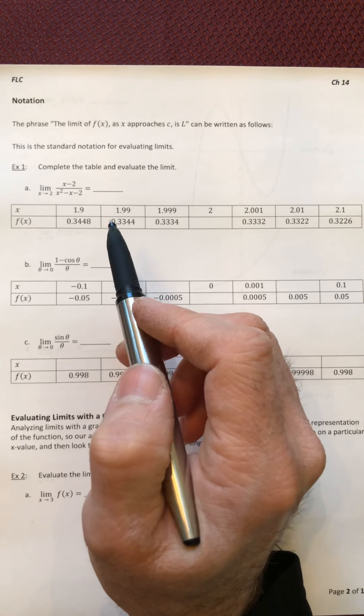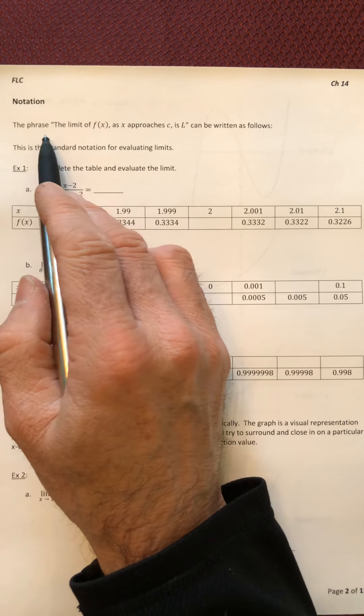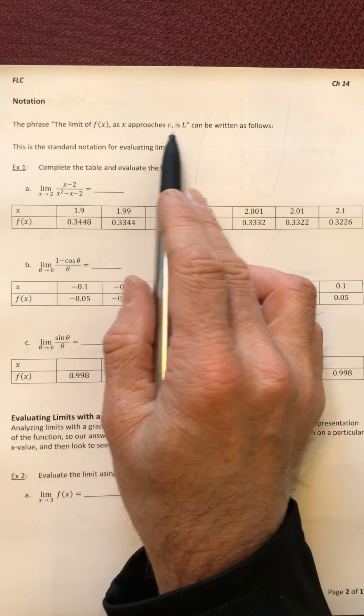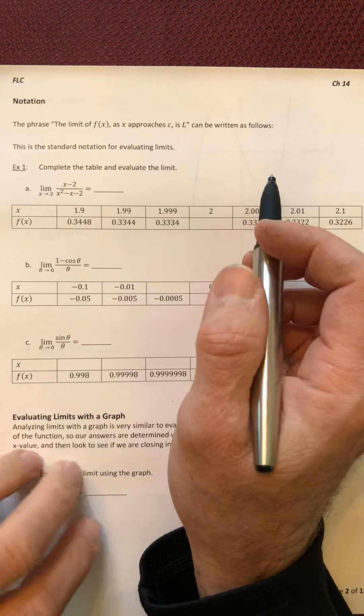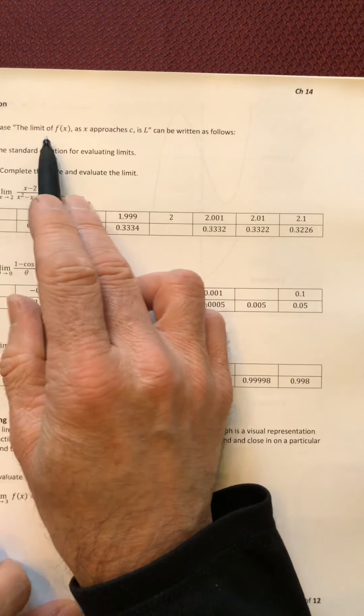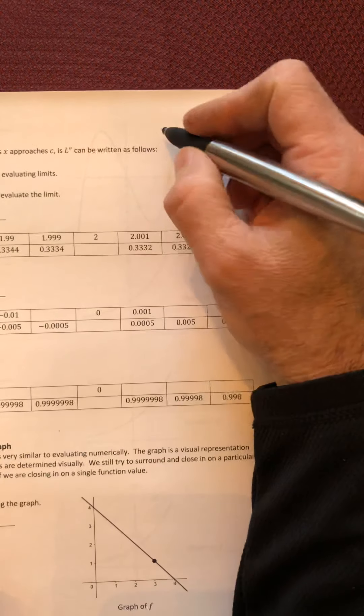Before we get into looking at more tables, let's look at some notation first. The phrase 'the limit of f of X as X approaches C is L' can be written as follows, because this is kind of a long thing to write every single time we do this, so the shorthand is this.